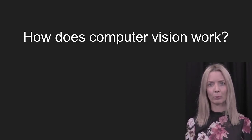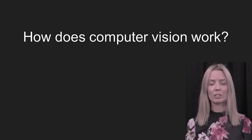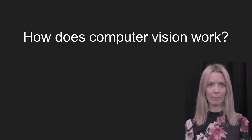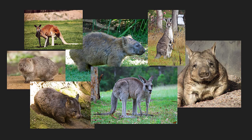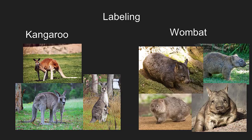Let's consider an example where we're wanting to teach a computer to recognise images of Australian mammals. We start by using lots of different images and types of mammals. Firstly, a human attaches a label to each image that identifies a mammal in it. For example, taking an image of a kangaroo, we label this as kangaroo, and the other as wombat.